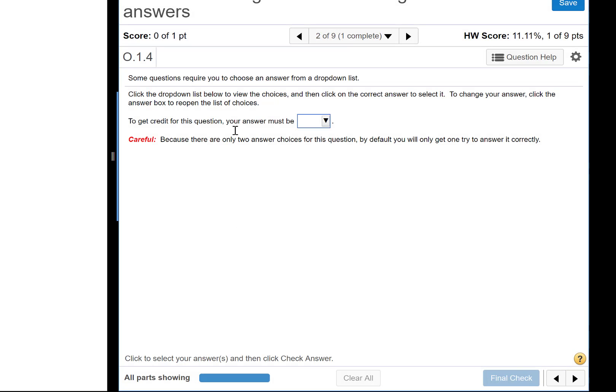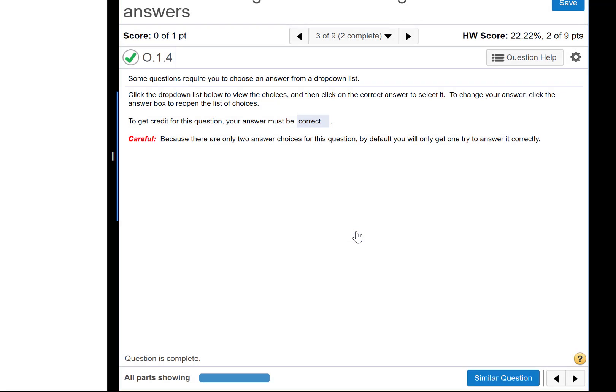Next demo here is the drop down menu question. To get credit for a question, your answer must be correct. So notice I just hit the down arrow and I get a list here of two things. You don't want to leave a blank. That's going to be marked as incorrect. You need to choose an option. So correct is the correct option. Final check. And then it prompts you to move on to the next question if you get that right.